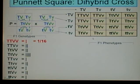Okay, there are 16 squares. One of those is big T, big T, big V, big V. So one out of 16 is big T, big T, big V, big V. So what we do is look at these counts and put them over 16.